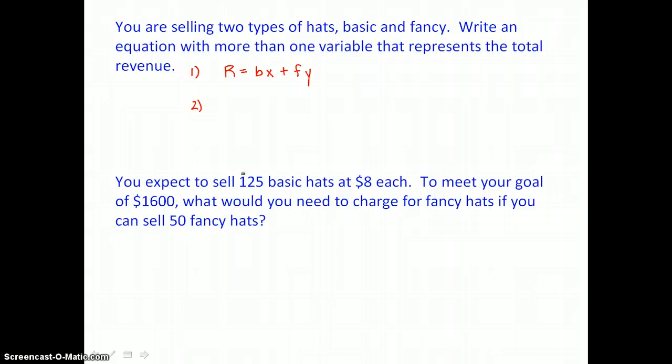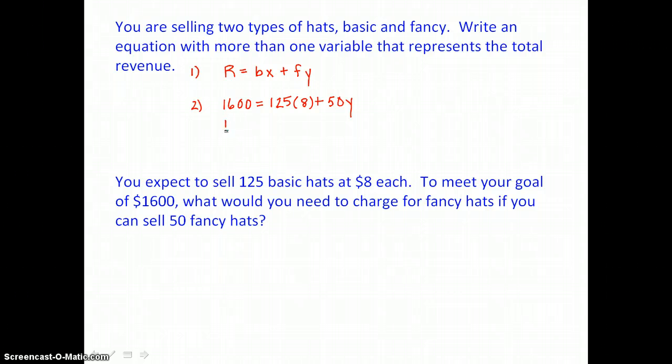The second part is to find out how much we need to charge for fancy hats. We know total revenue. We know we want to make $1,600. That's our goal. We know the number of basic hats, 125, and they're being sold for $8 each. We know the number of fancy hats, 50, and what we're looking for is the cost of a fancy hat. So we're solving this equation for Y. So first step is going to be to multiply on the right. And 8 times 125, that's 1,000.